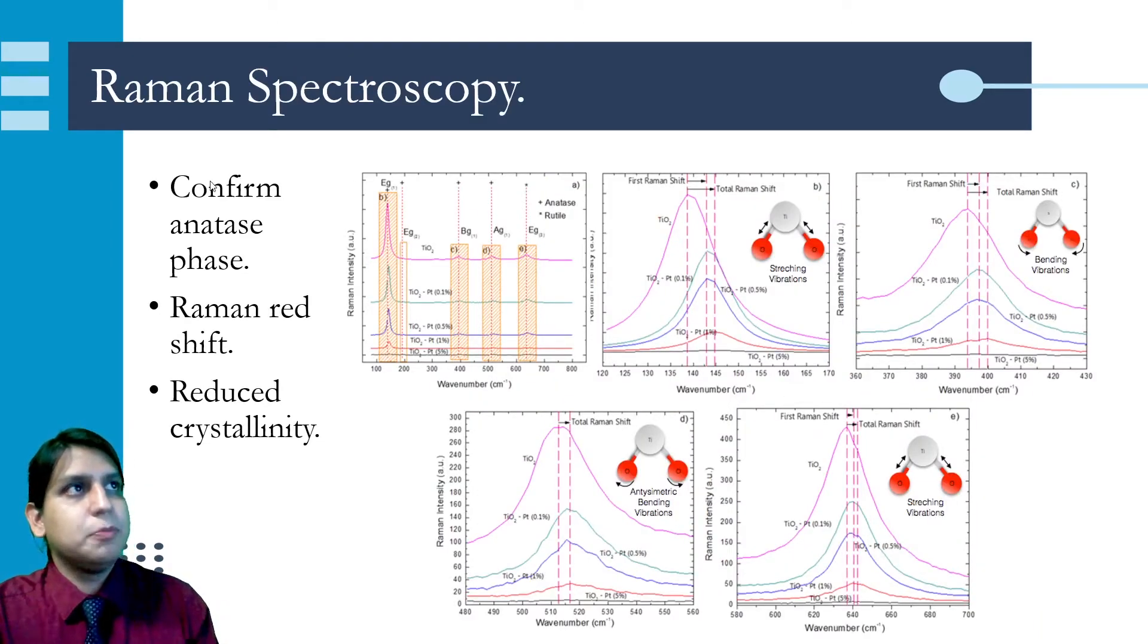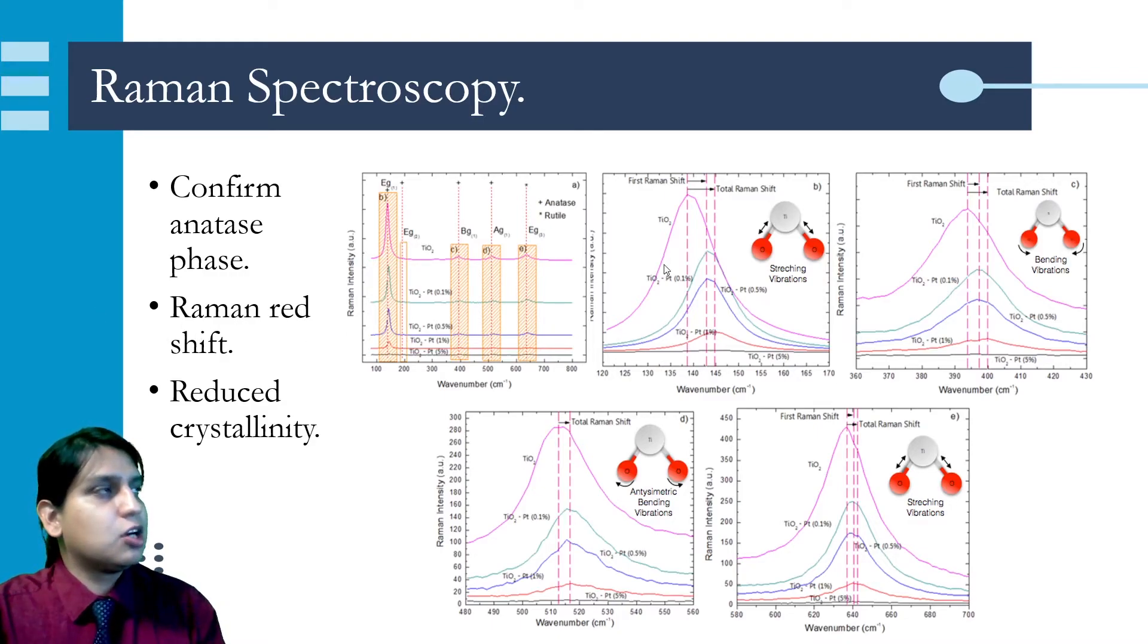With Raman spectroscopy, we confirmed the anatase phase of the titanium dioxide, and we observed a Raman red shift in the normal vibrational mode of titanium dioxide, which can be attributed to the presence of platinum in the structure. We also have reduced crystallinity of the material, which is concordant to the data obtained by X-ray diffraction.